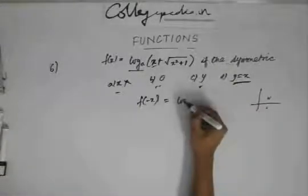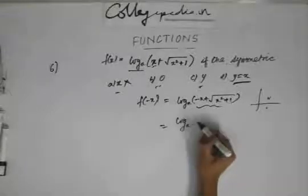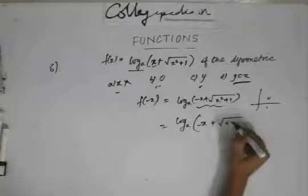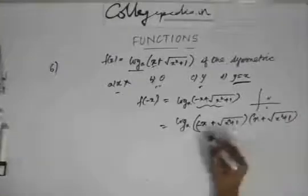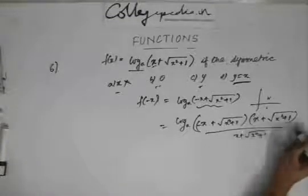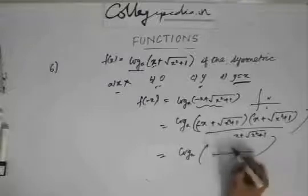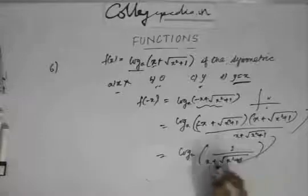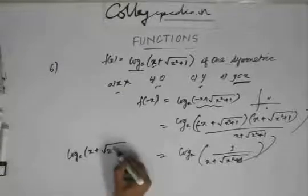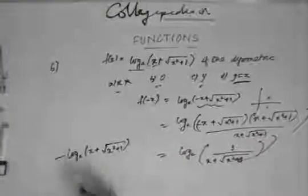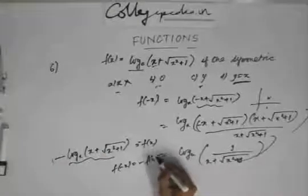Let's find f(-x). It will be log(-x + √(x² + 1)). If I multiply and divide by (x + √(x² + 1)), the denominator gives the same term and the numerator gives 1. I can rewrite this as log(x + √(x² + 1)) to the power of minus one, bringing the minus one out front. So this is again f(x) with a minus sign, meaning f(-x) = -f(x).